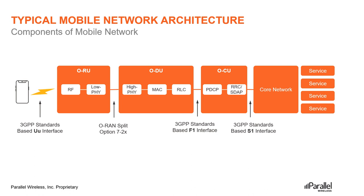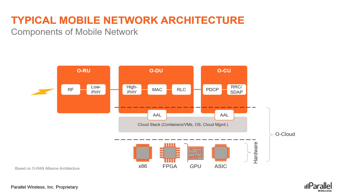Let us now understand O-Cloud. The ORAN Alliance defines O-Cloud as a cloud computing platform comprising a collection of physical infrastructure nodes that meet ORAN requirements to host the relevant ORAN functions, the supporting software components, and the appropriate management and orchestration functions. The term O-Cloud refers to a collection of O-Cloud resource pools at one or more locations and the software to manage nodes and deployments hosted on them. An O-Cloud will include functionality to support both the deployment plane and management services.